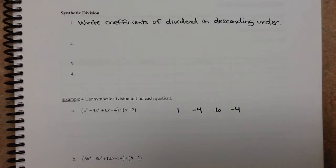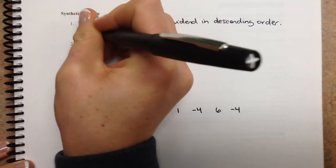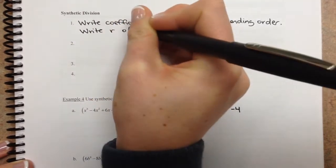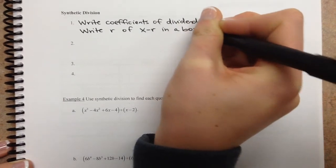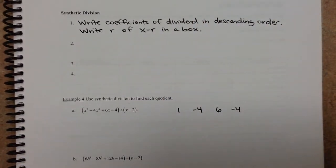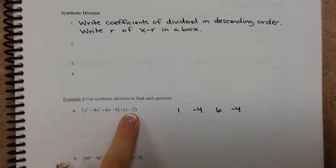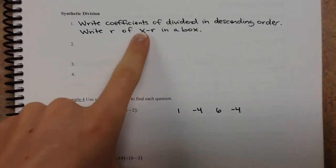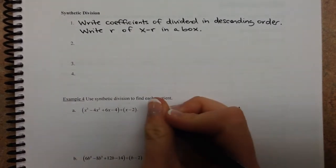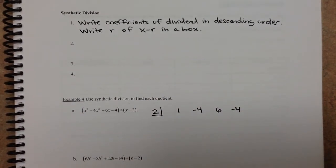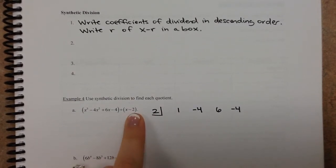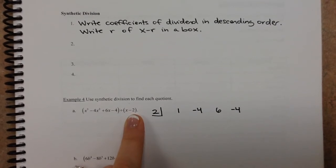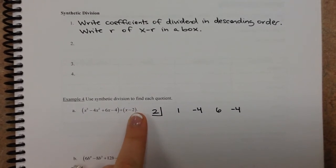Next, write r of x minus r in a box. So x minus 2, this is literally x minus r, so you write this 2 and then put it in a little box. So that is the divisor. The reason we put a 2 here and not a negative 2: picture if you were to take x minus 2 and set it equal to 0, what you get is 2. So what's going in the box is actually the opposite of what you see here.